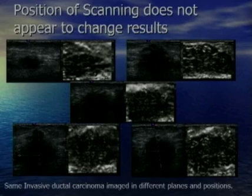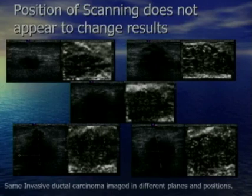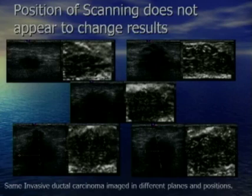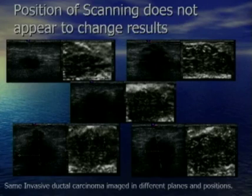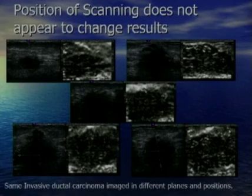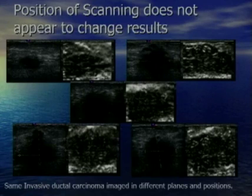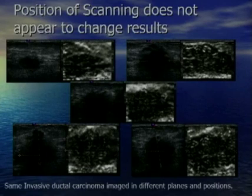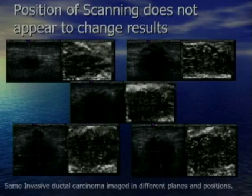Cancers tend to show up larger on the elastogram than on the B-mode image — we have seen cancers that appear almost four times as large. This is important: if you have a 2 cm lesion that gets three times larger, it's now 6 cm and completely envelops the field of view. You won't be able to see the borders or get accurate measurements. For larger lesions, we try to pick a position where the lesion being examined is about 1 to 1.5 centimeters, ensuring we can see the borders on the elastogram.